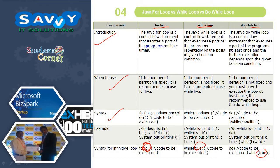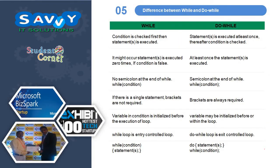Difference between while and do-while: in while, the condition is checked first, then the statement is executed. Statements may be executed zero times if the condition is false. In do-while, the statement is executed at least once, and thereafter the condition is checked. In while, there is no semicolon at the end of the while condition; in do-while, brackets are always required. Variable in while condition is initialized before the loop execution; in do-while, the variable may be initialized before or within the loop. While loop is an entry-controlled loop; do-while is an exit-controlled loop.